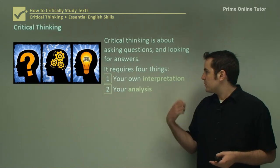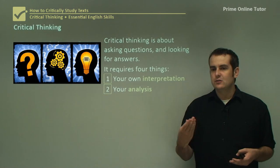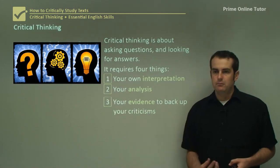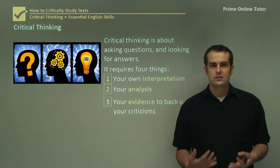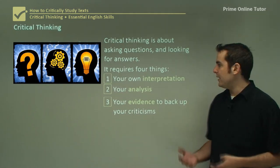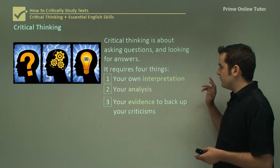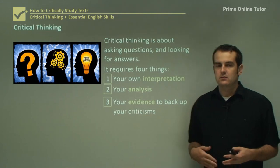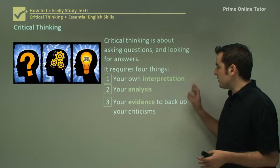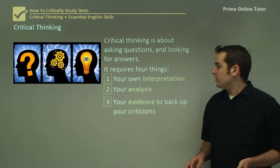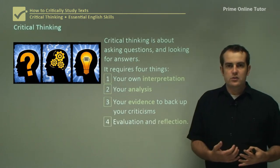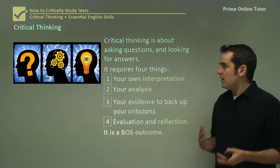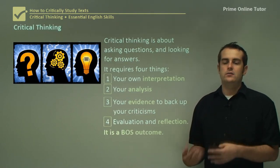What about this interpretation has made me think that way? Then go into developing that. The third part is basically your evidence to back up what you're criticizing or saying. Once you've thought about it and worked out why, you need to figure out what in that text or idea makes you think those things. The final process is to evaluate and reflect — to ask, is that the best way to look at it?